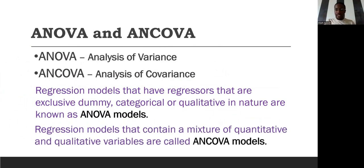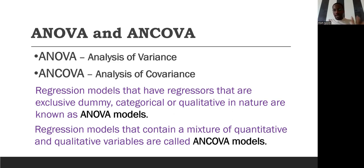If you are running a regression model where it contains a mixture of quantitative variables — such as years of education or wage — and qualitative variables like gender and marital status, then you are running what we call ANCOVA models, or analysis of covariance. Later in lectures ahead, we'll learn how to conduct ANOVA and ANCOVA tests when it comes to generalized linear models.